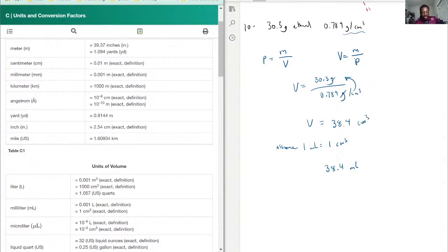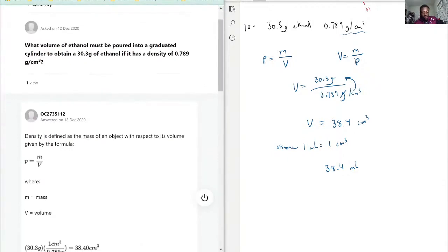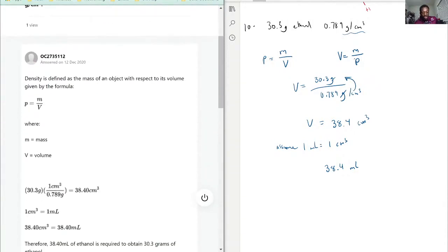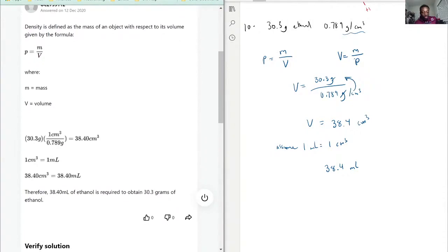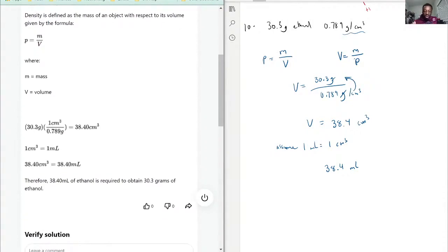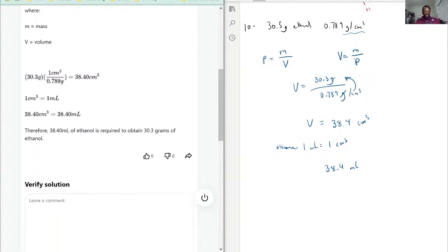Now let's see how we did based on this assumption. Exactly, they make the same assumption here, and they would say 38.4 milliliters. So 38.4 milliliters of ethanol is required to obtain 30.3 grams of ethanol based on the density given, and we're able to rearrange the formula to where we're looking for volume now. So that being said, this is correct.